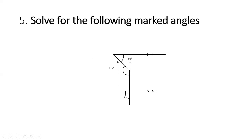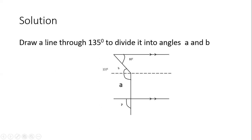For question five, we have to find angle p. We are given 80 degrees on one side and 135 degrees as the angle at that vertex. Draw a line through the 135-degree angle to divide it into angle a and angle b. Angle b and the 80-degree angle are alternate angles — like a Z-shape — so b equals 80 degrees. Then a equals 135 minus 80, giving a equals 55 degrees.